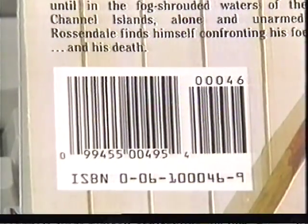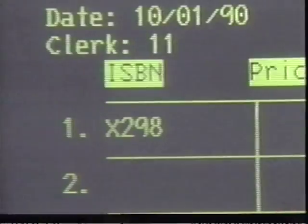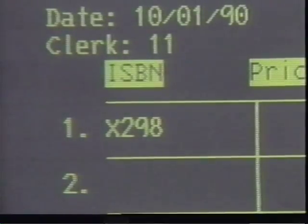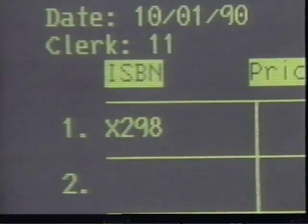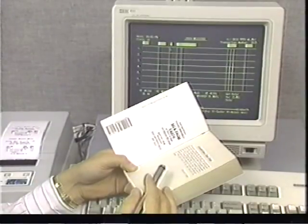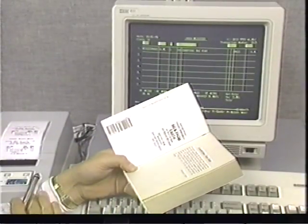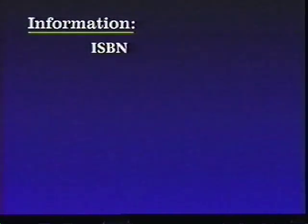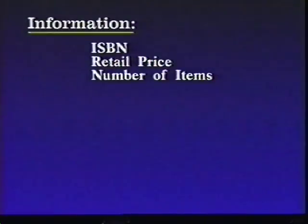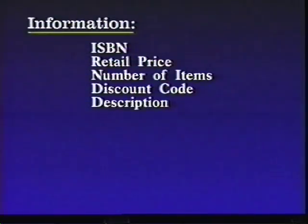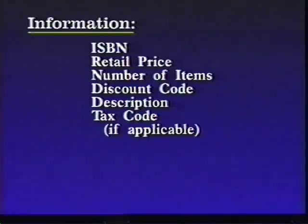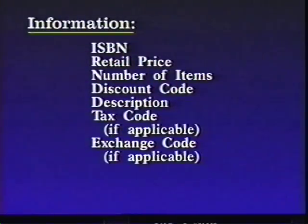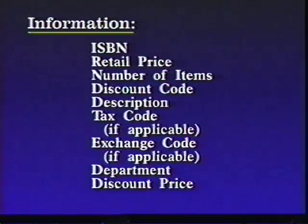The ISBN is always 10 numeric digits. An item code starts with one or more alphabetic characters that can be followed by numeric digits, and does not have to fill the entire ISBN field. When you pass the wand over the barcode, pertinent information about the item automatically appears across the line, including the ISBN, retail price, number of items, discount code, a description of the item, a tax code if applicable, an exchange code if applicable, department, and the discount price.